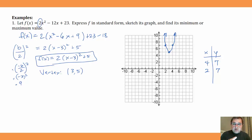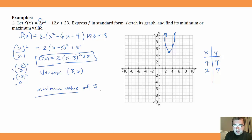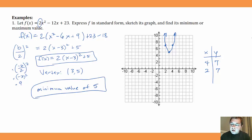We've expressed it in standard form and sketched the graph. Now let's find its minimum or maximum value. This parabola opens up, so it has a minimum value. That minimum value is 5 — the y-coordinate of the vertex. The function has no value less than 5, so the minimum value is 5.